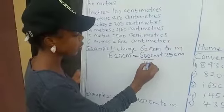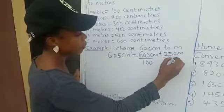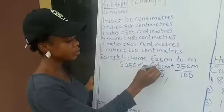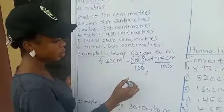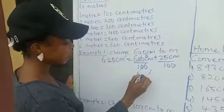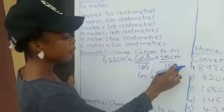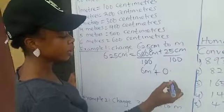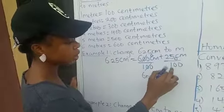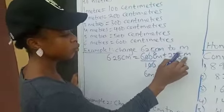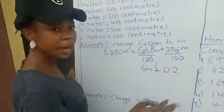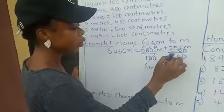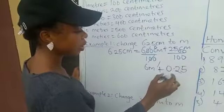600 divided by 100, and 25 divided by 100. 100 in 100 is 1; 100 in 600 is 6. So that's 6 meters. How many hundreds can we see in 25? Impossible. You write 0, put your decimal point, add 0 to make 250. How many hundreds in 250? That's 2, remainder 50. Add 0 again to make 500. How many hundreds in 500? That's 5. So that gives 0.25.